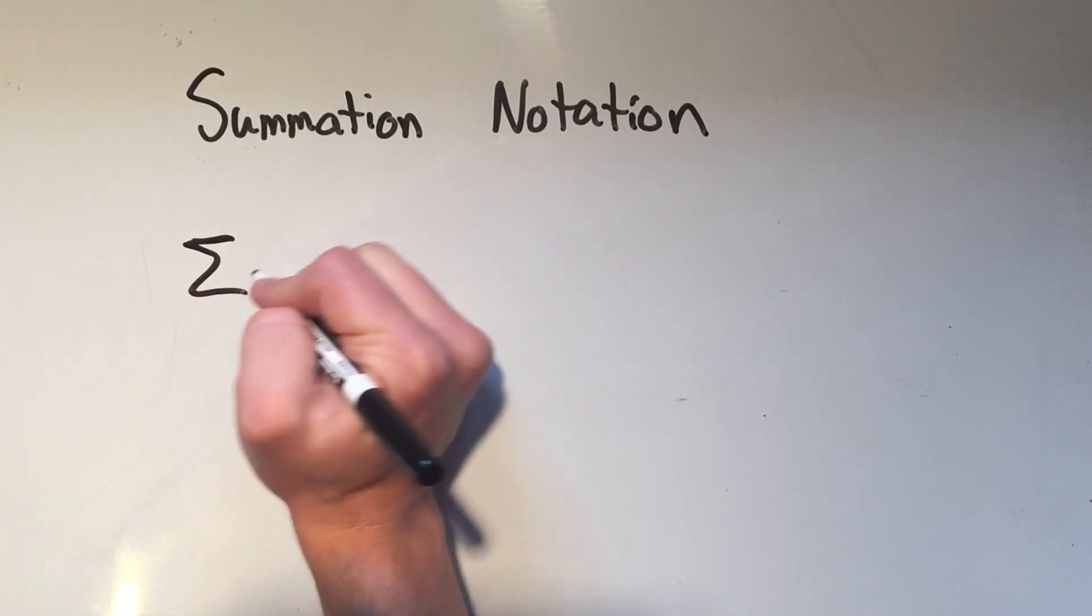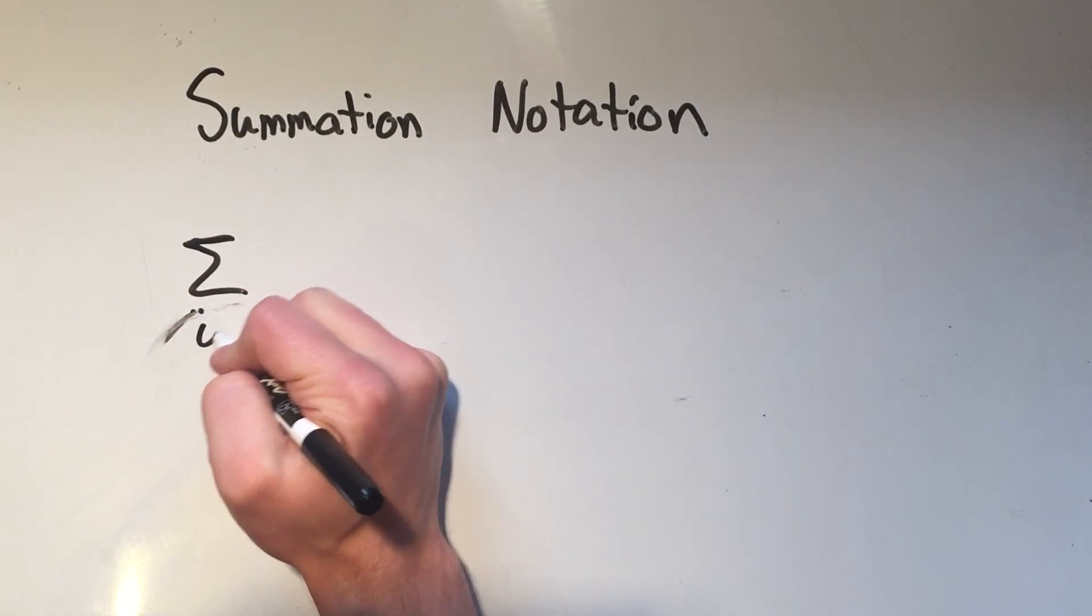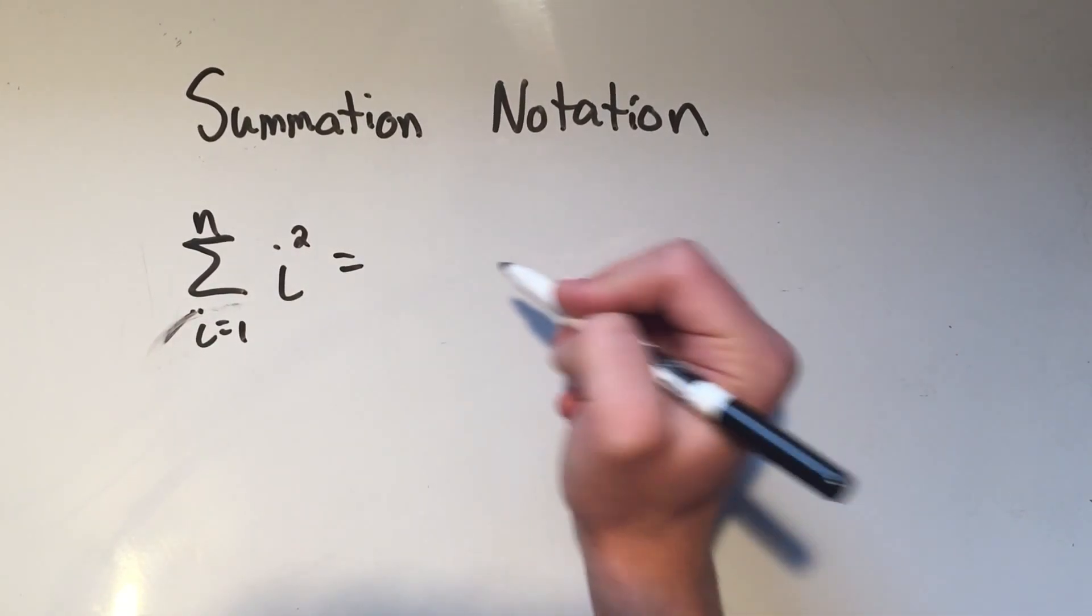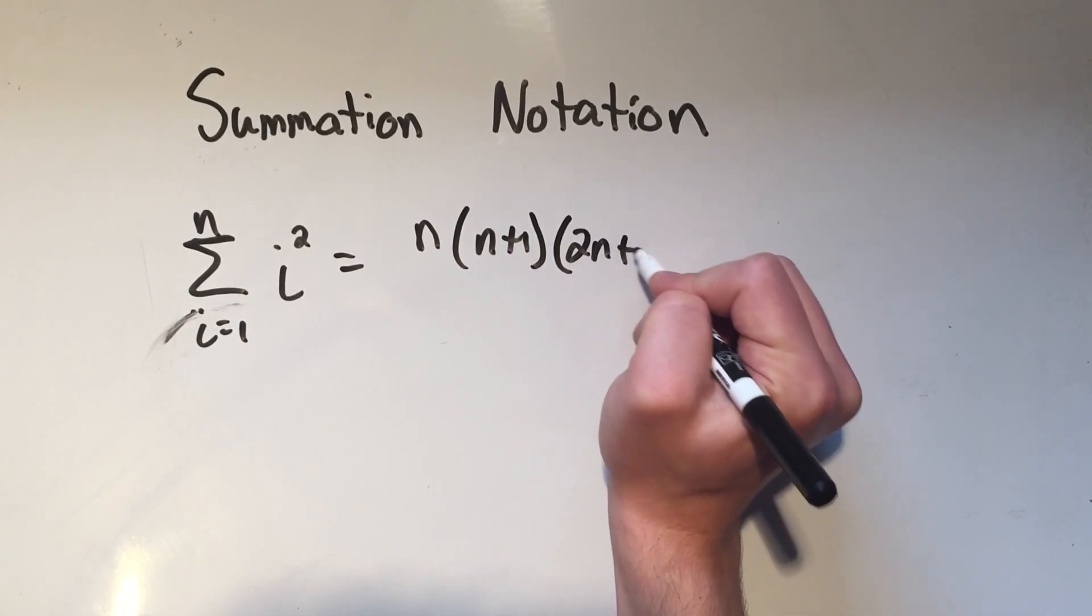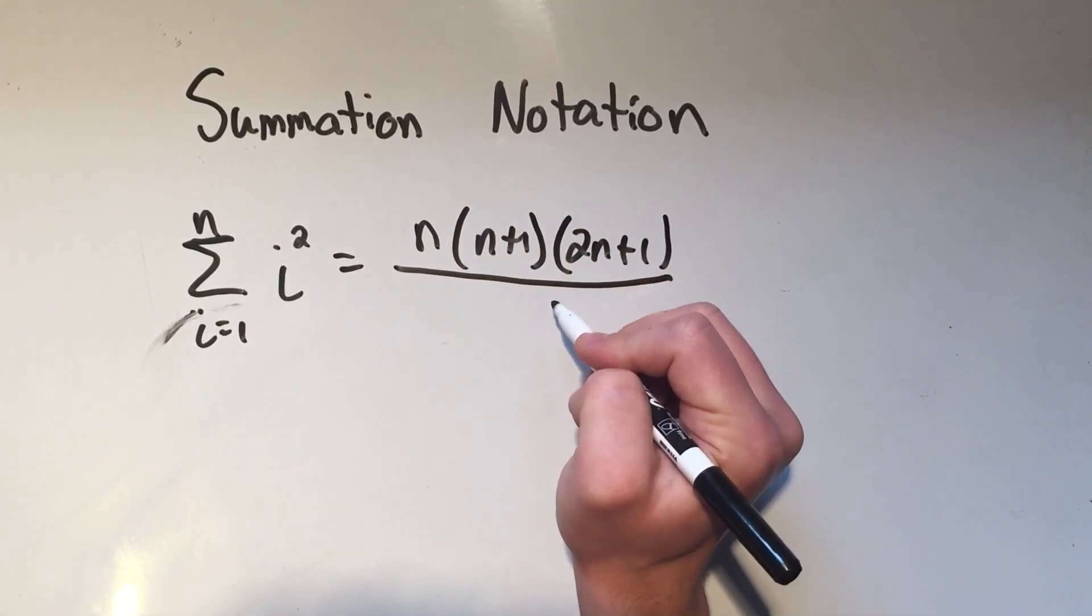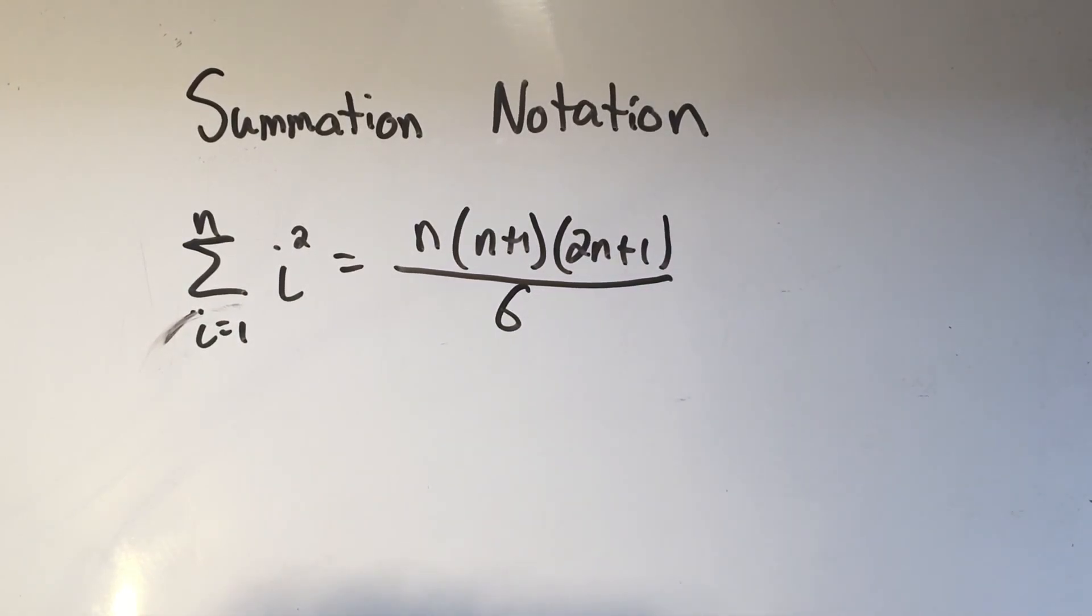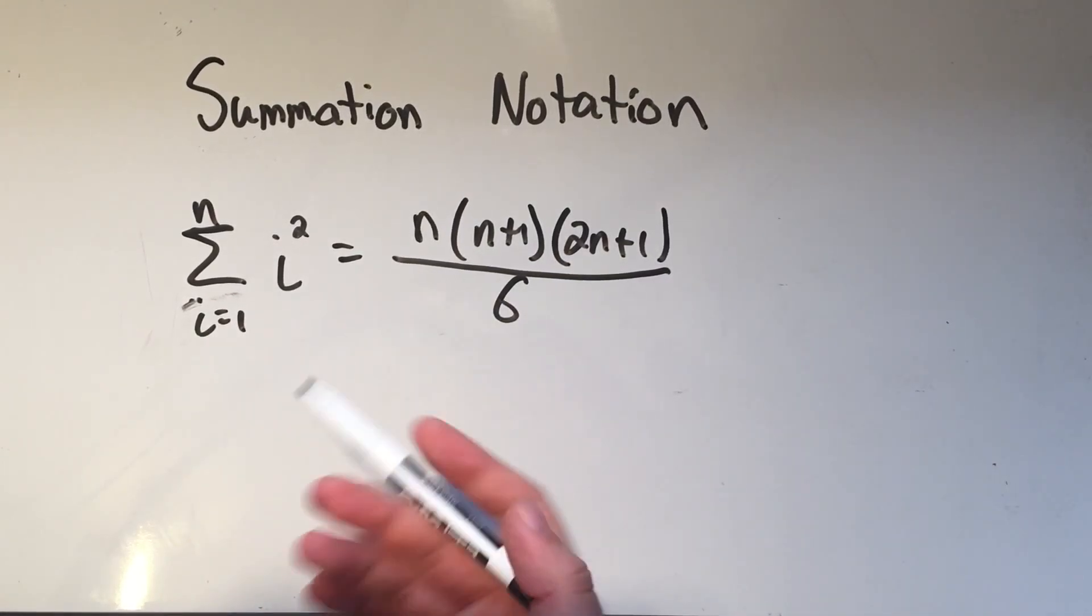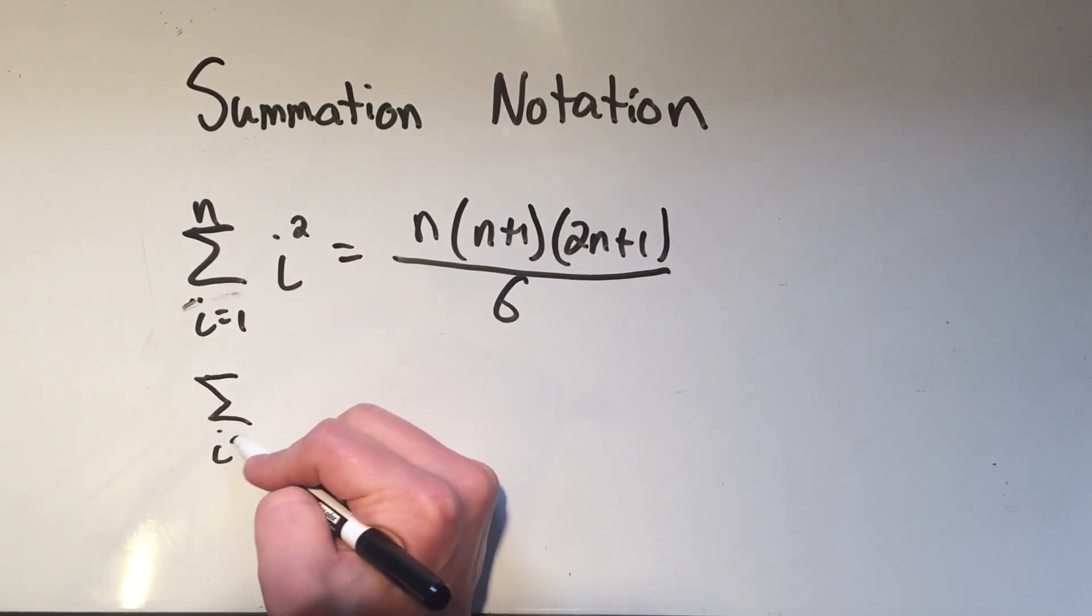There's another one that you might see. It's the sum of i equals 1 to n of i squared. And it's pretty similar. It's n times n plus 1 times 2n plus 1 over 2. Or, I'm sorry, it's over 6. So it's a little bit different, but kind of the same. This one, again, doesn't come up as much, but it might come up when you're doing the definition of the definite integral.